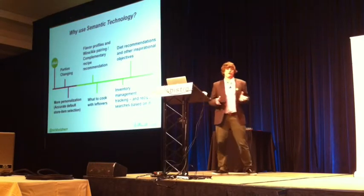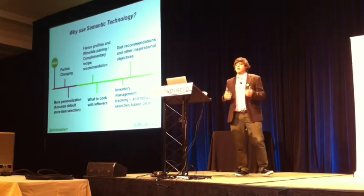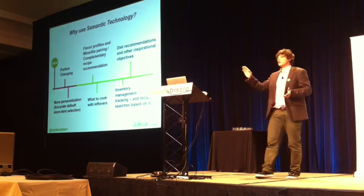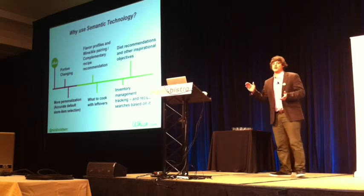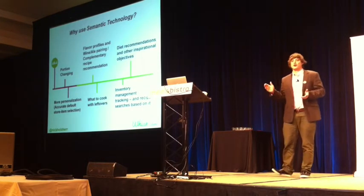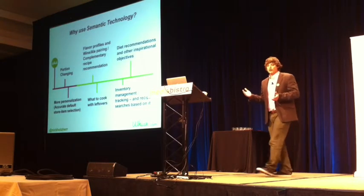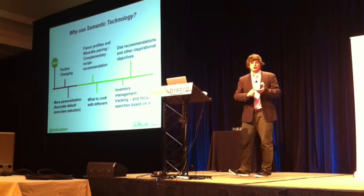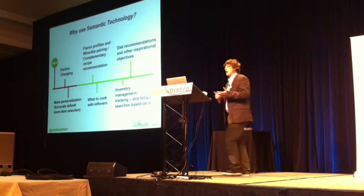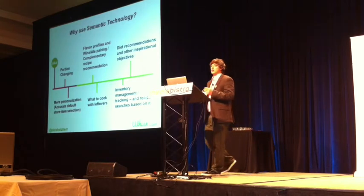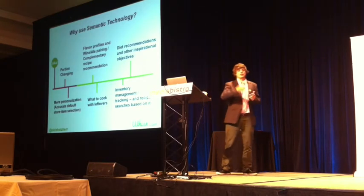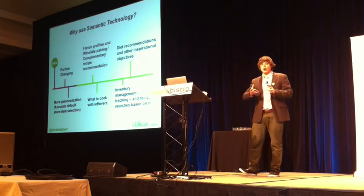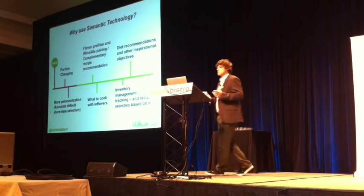So I mentioned portion changing. What we can do — if you're a cook yourself, you'll know when you scale portions it's not a linear formula. If you double the portions, you don't double the olive oil, salt, or chili. So what our system does, it uses algorithms to work out — we built a dataset to work out which ingredients scale in what ways in relation to other ingredients in the recipe.